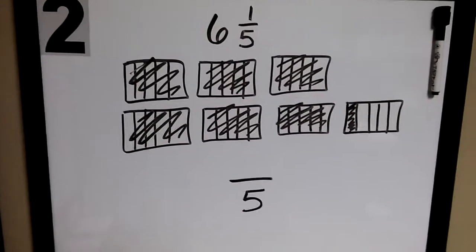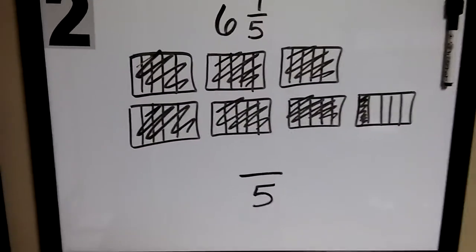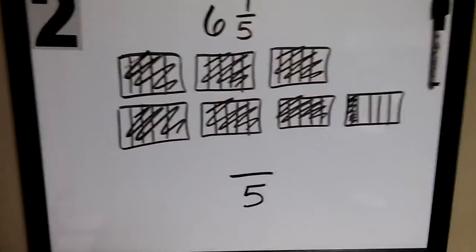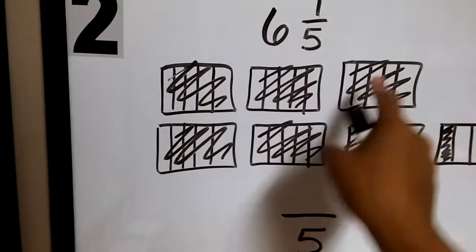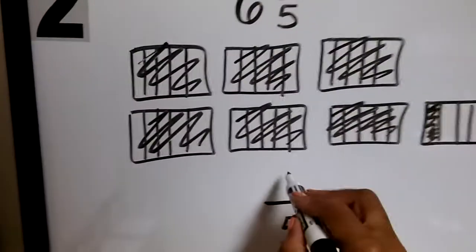And how many parts are being considered or shaded? We have five, ten, fifteen, twenty, twenty-five, thirty, thirty-one.